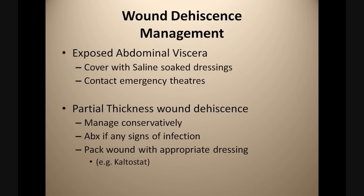If patients have exposed abdominal viscera, we want to cover it with saline-soaked dressings to stop it drying out and contact emergency theatres to get them back to theatre to close the wound as soon as possible. For those with partial thickness wound dehiscence, we can sometimes manage them conservatively — give antibiotics if there are signs of infection and pack the wound with appropriate dressings. These patients may have more significant scarring at their surgical site which may require revision at a later date.